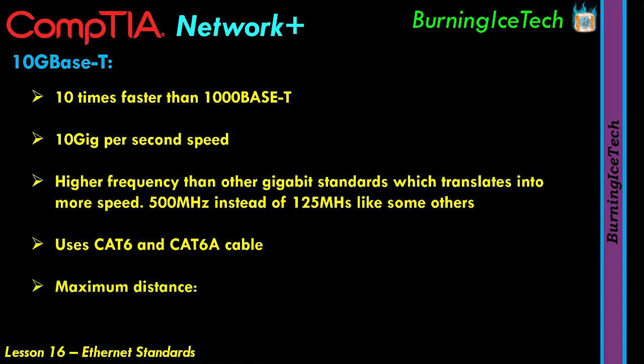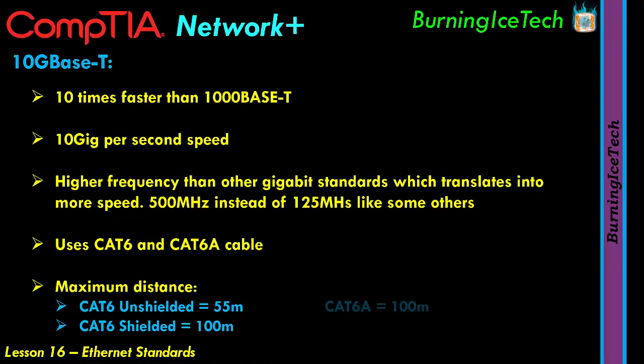The maximum distance the 10GBaseT standard can go depends on the cable you use. If you're using CAT6 unshielded — UTP, unshielded twisted pair — you can expect a distance of up to 55 meters. If you're using CAT6 shielded — STP — you can expect the usual 100 meters. However, nobody is really using CAT6. Instead, people are using CAT6A. And if you're using CAT6A, you can get 100 meters regardless of whether you're using unshielded or shielded cable.